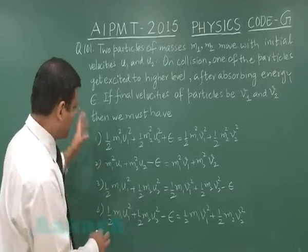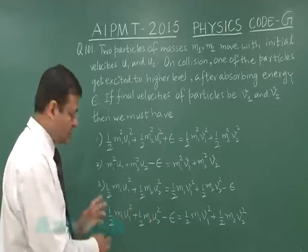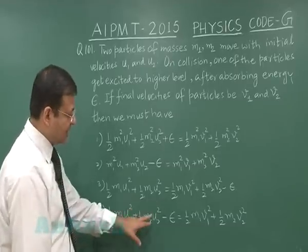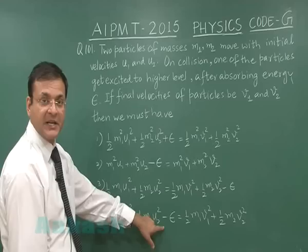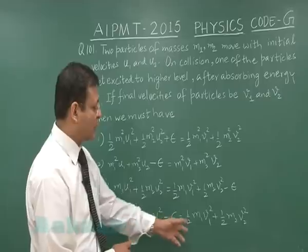The most appropriate option is the fourth one, where initial kinetic energy minus the excitation energy equals the leftover final kinetic energy for these two bodies.